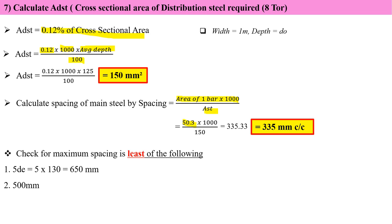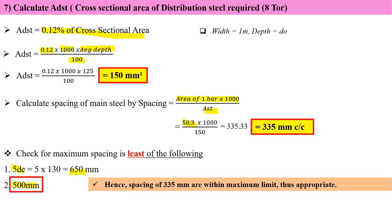Checking with maximum spacing allowed by IS code: 5DE multiplied by effective depth gives 650, and second criteria is 500 mm. Least is 500 mm, which is within the permissible limit. So 335 mm center to center spacing is within the limit of maximum spacing allowed.